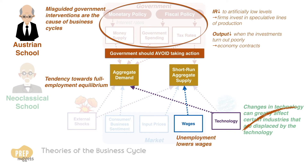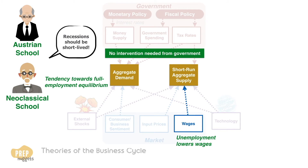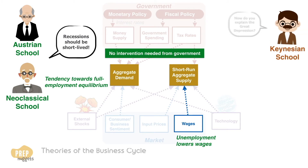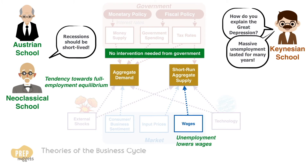So, in essence, neoclassical and Austrian theories both agree that wages will adjust, such that the economy will always return to full employment, so recessions should be short-lived. In practice, however, long and deep recessions like the Great Depression seem to contradict their theories, where massive unemployment lasted for several years.